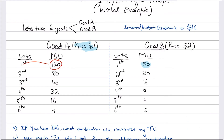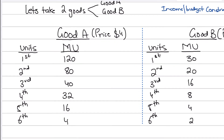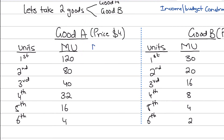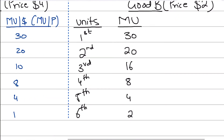What the equi-marginal principle teaches us is that we need to calculate the marginal utility per dollar — by dividing the marginal utility by the price. For good A: 120 ÷ 4 = 30 utils per dollar; 80 ÷ 4 = 20; 40 ÷ 4 = 10; 32 ÷ 4 = 8; 16 ÷ 4 = 4; and 4 ÷ 4 = 1.